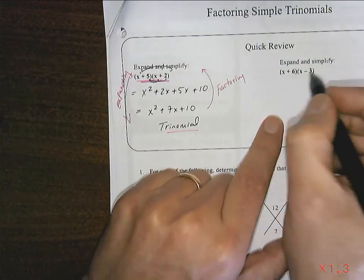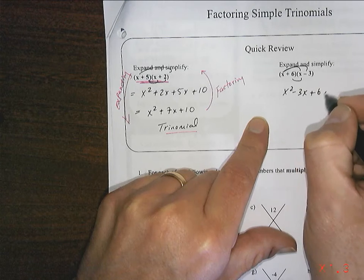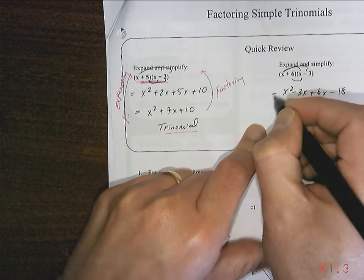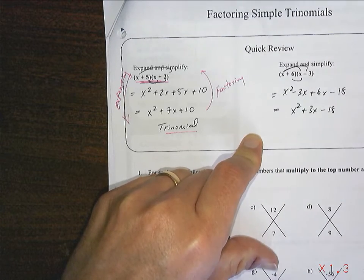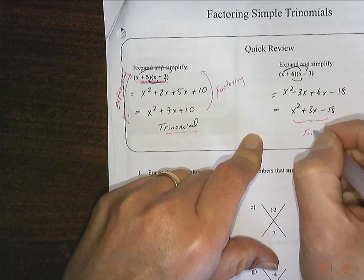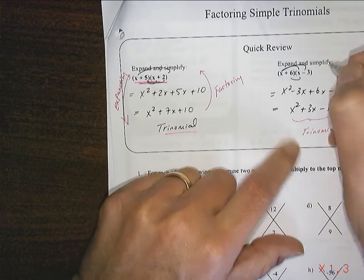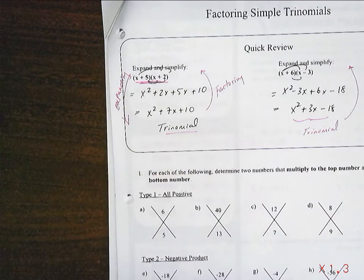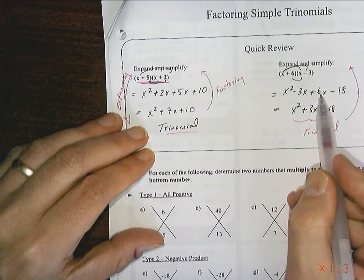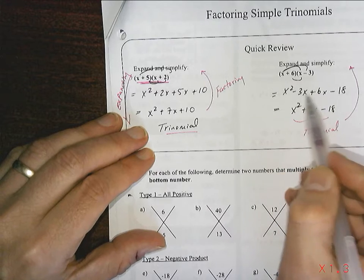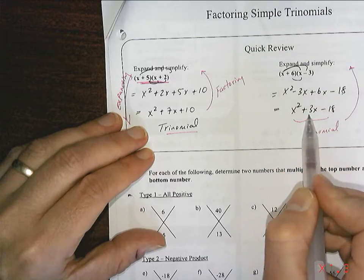Here's another example. Two binomials. We expand them: X squared minus 3X plus 6X minus 18, and that becomes X squared plus 3X minus 18. And we want to be able to go backwards. What's going to help us do that is noticing that these two numbers multiply to give 18 and add to give this 3. And that's going to be important.